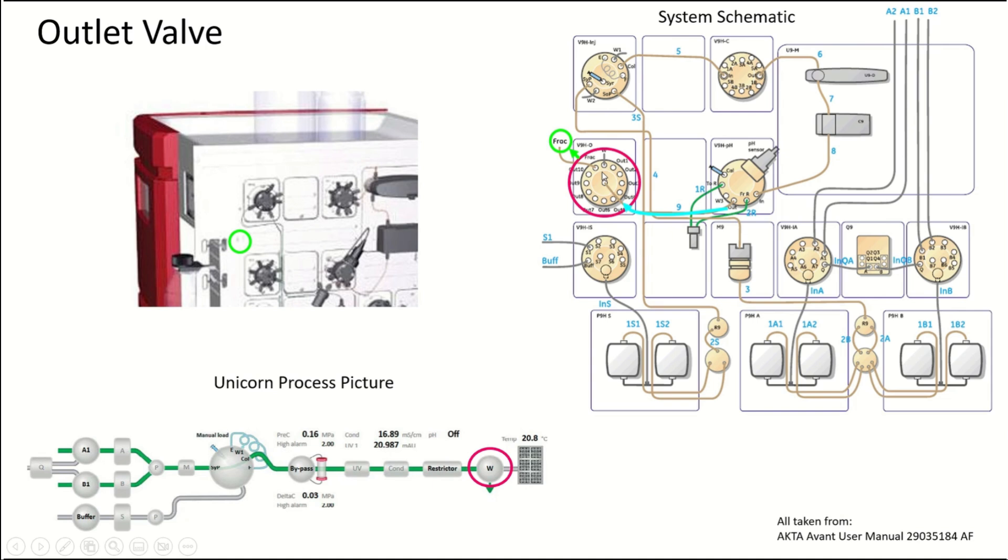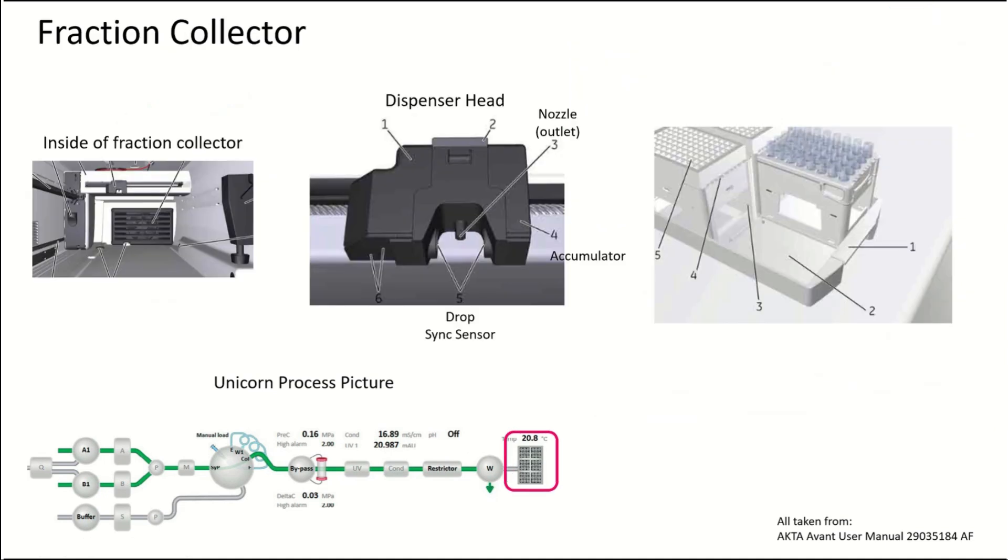The fraction collector inlet is this little tiny hole on the side of the system. It's kind of up and to the left of the outlet valve. A tube goes in there, goes right underneath the LCD screen, and then into the drawer. Looking inside the fraction collector drawer, you have the funnel right here that the dispenser head goes into when it's not collecting a fraction. This is the dispenser head, and it's got an outlet nozzle that drips into each of the different fractions.